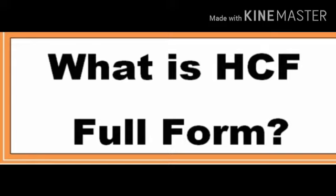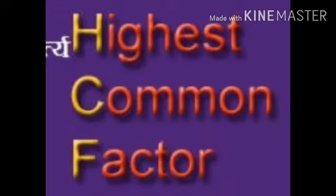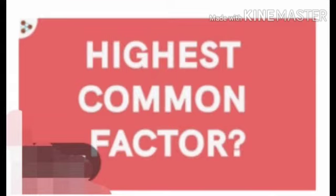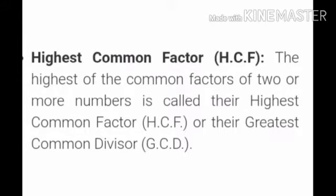Today I will teach you about SCF and how to solve questions on SCF. So students, firstly, what is the full form of SCF? The full form of SCF is H for Highest, C for Common, F for Factor — means Highest Common Factor. What is the highest common factor? The highest of the common factors of two or more numbers is called the Highest Common Factor, or Greatest Common Factor.